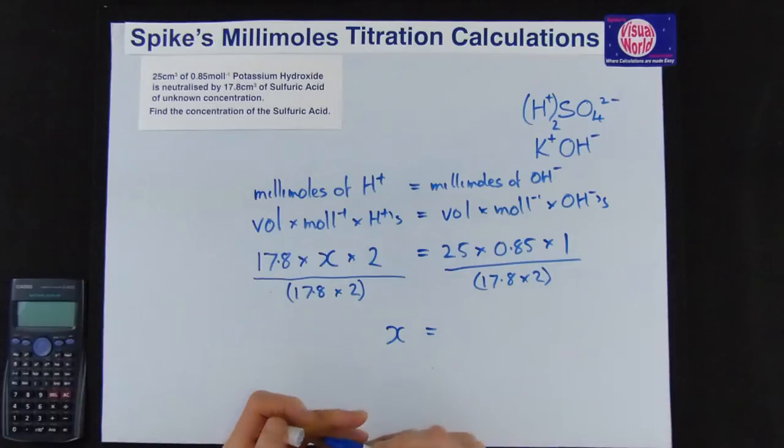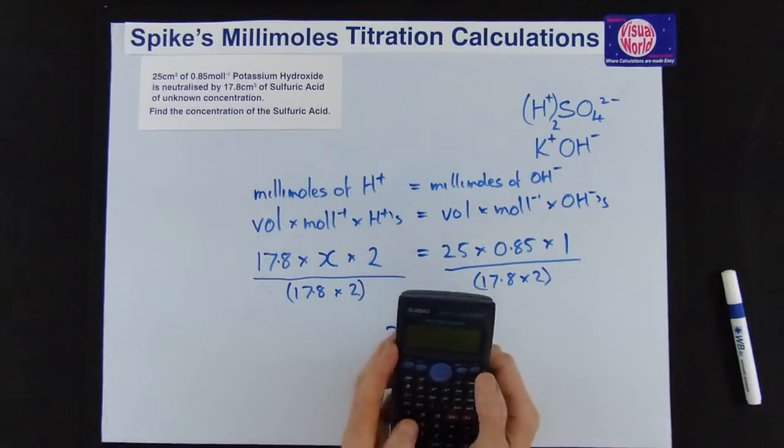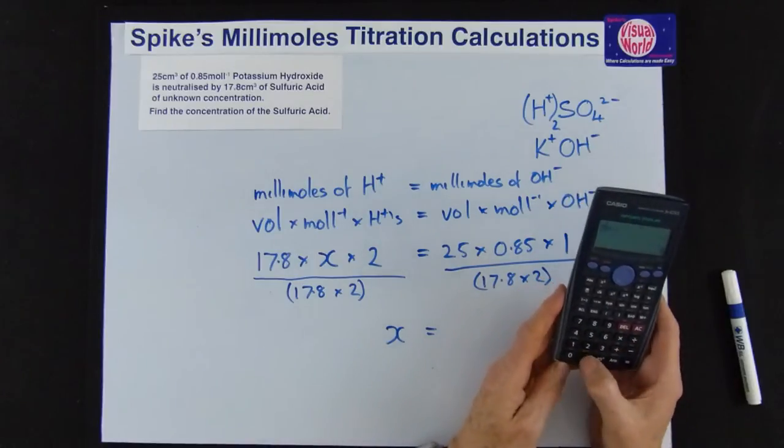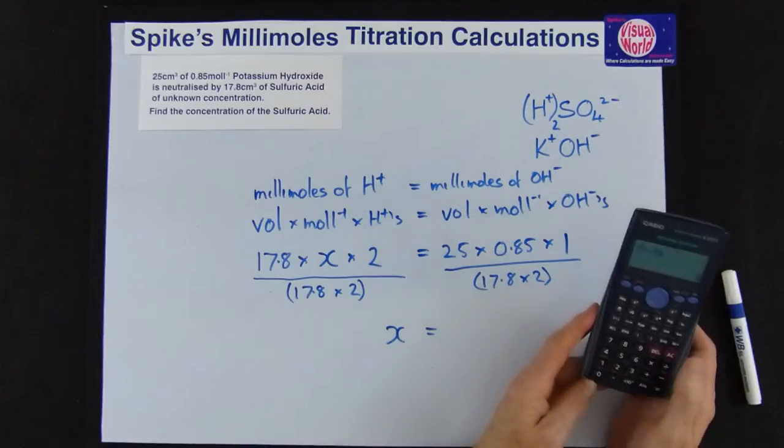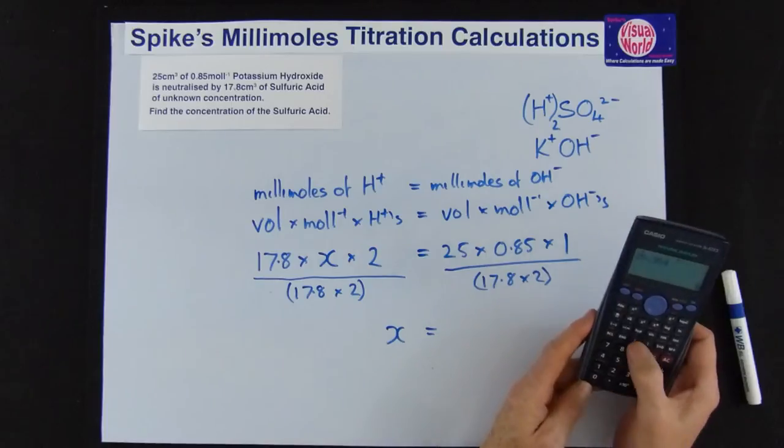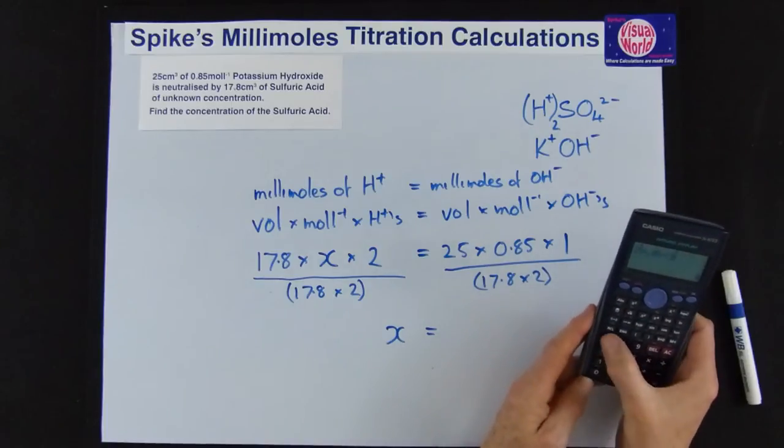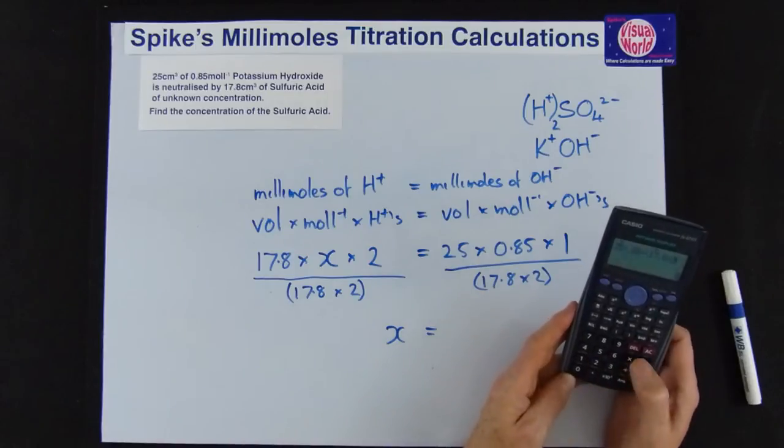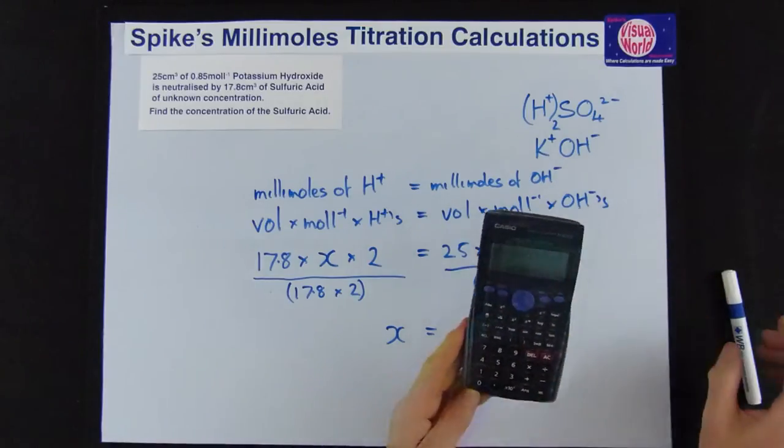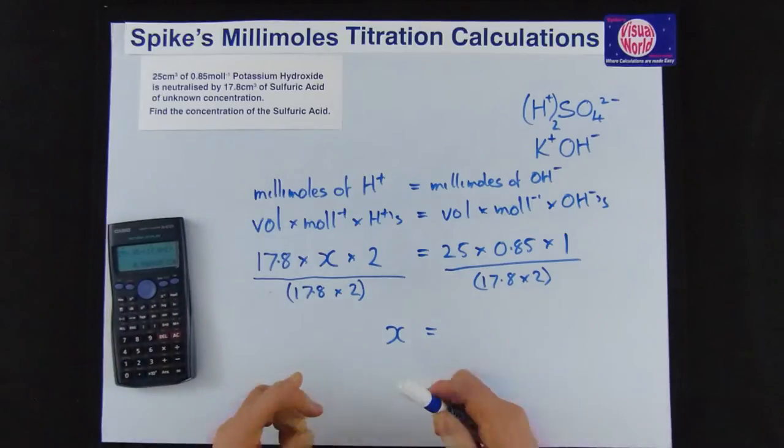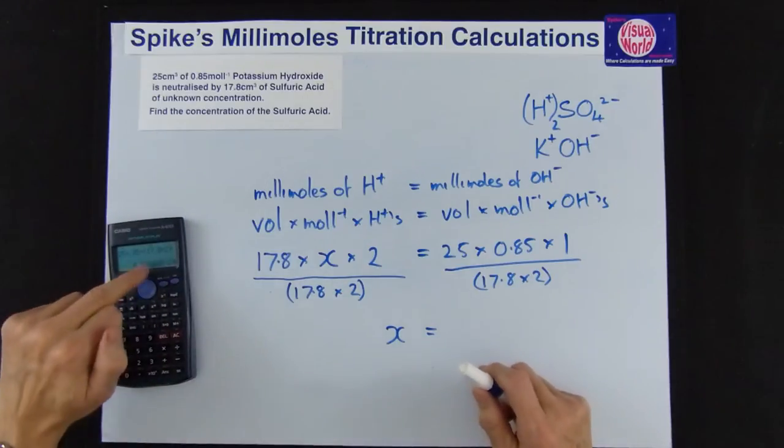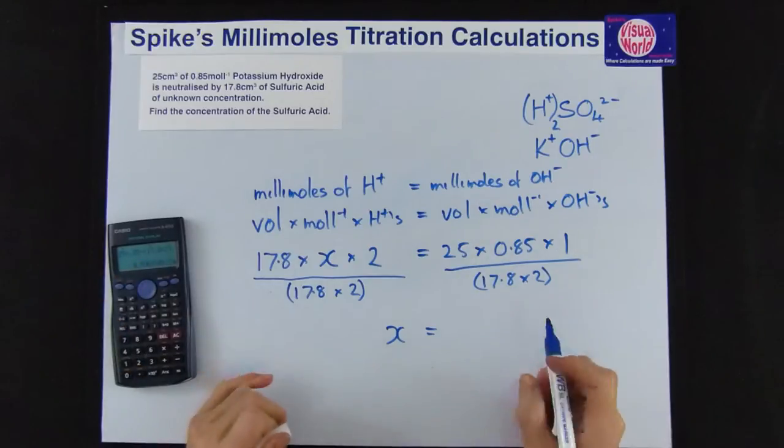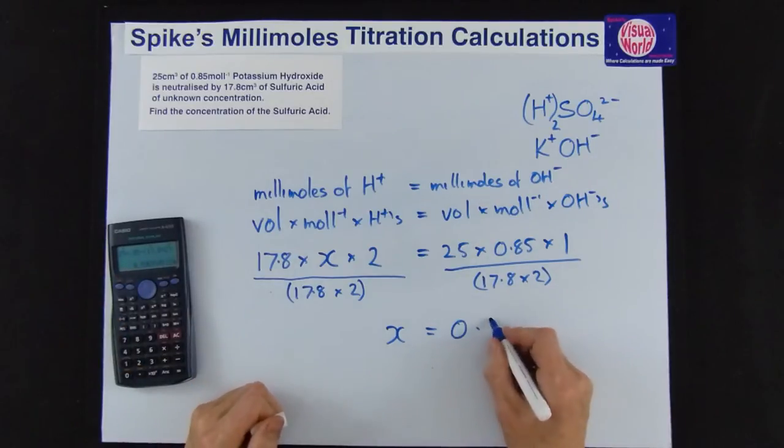So all that's left now is just do that on the calculator and we've got 25 times 0.85, we don't need to use the 1, divided by, remember to open the brackets, 17.8 times 2, close your bracket, equals and we've got 0.596. So if we want to take it to 2 places the 6 would round the 5.9 up so you get 0.60.